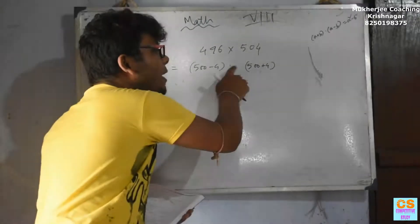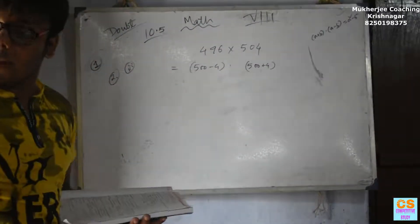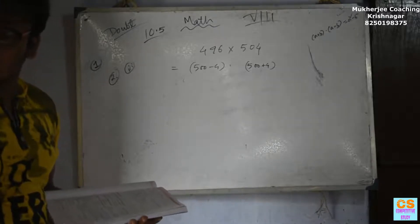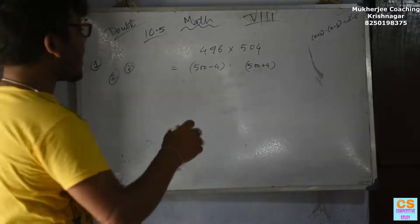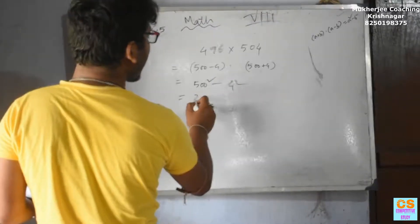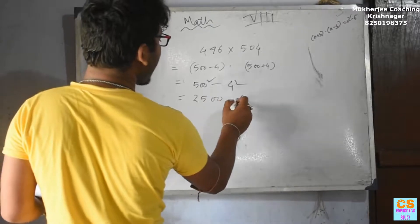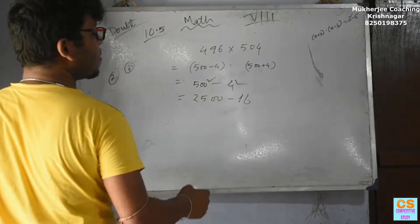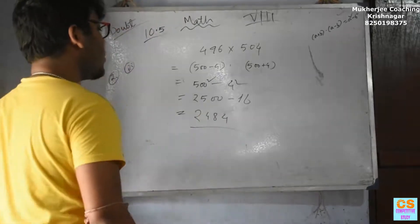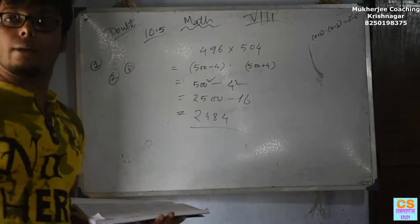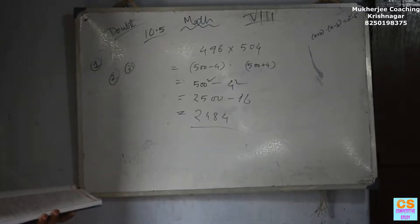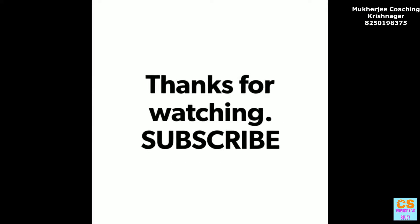A minus B into A plus B, and A plus B into A minus B equals A square minus B square. A square minus B square.